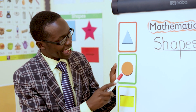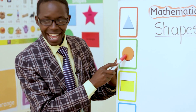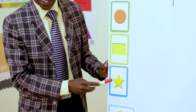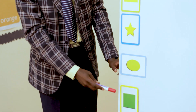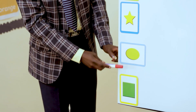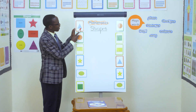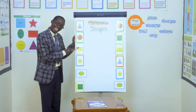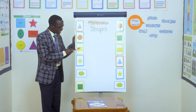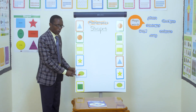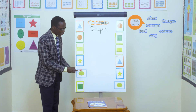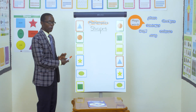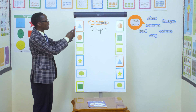Triangle, circle, triangle, circle, rectangle, star, rectangle, star. All these ones are shapes. So the first one, we call it triangle.